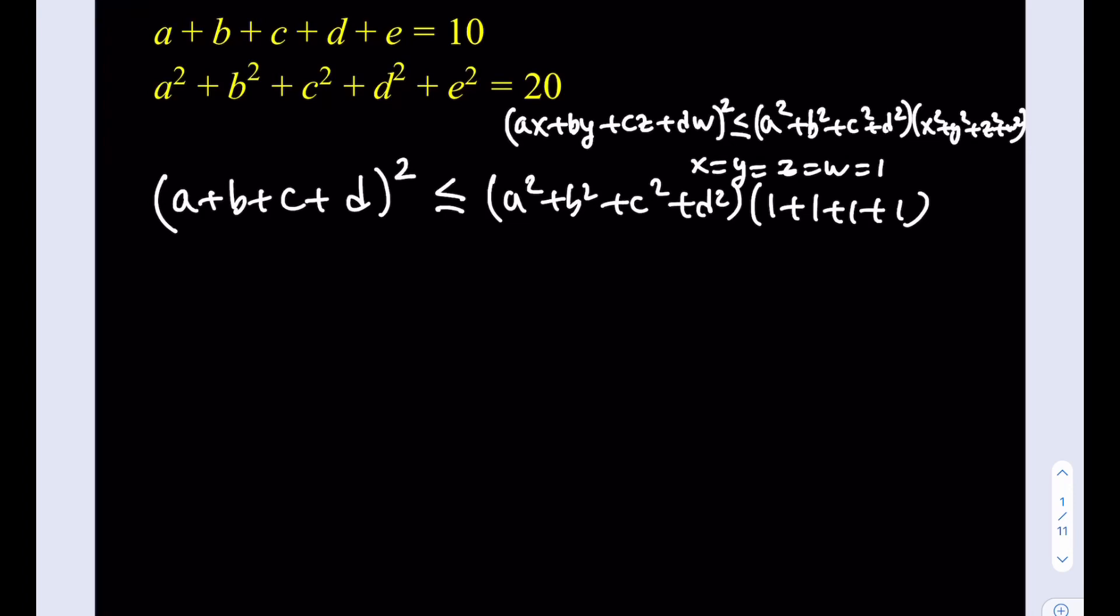Now, this is equal to 4, so we got a nice inequality. Let's rewrite it. (a+b+c+d)² is less than or equal to 4 times the quantity (a²+b²+c²+d²). Okay.